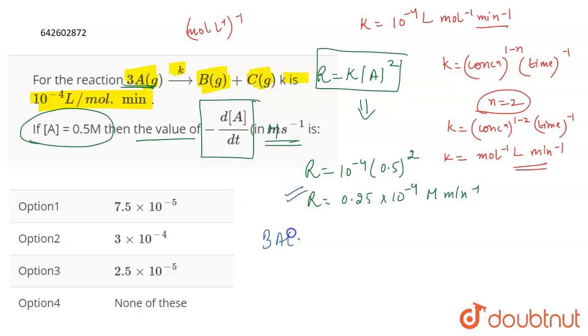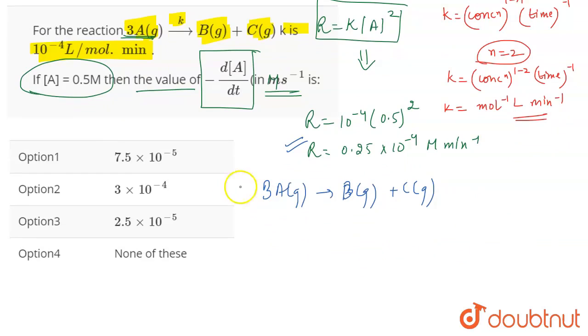Now, if we consider this reaction which is 3A gas giving B gas plus C gas, rate can be expressed in terms of rate of disappearance of reactant and rate of appearance of product. So rate can be written as minus dA by 3 dt is equal to dB by dt. So this will be positive because B is the product, and this will be negative because A is the reactant. So reactant is disappearing, therefore the negative sign. Product is appearing, therefore the positive sign. This will be equal to plus dC by dt.